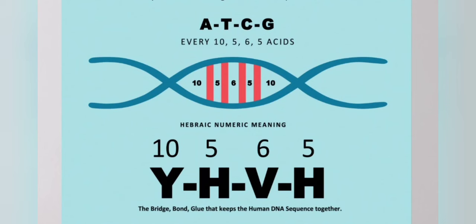At the base of our DNA, we have four main amino acids: A, T, C, G — adenine, thymine, cytosine, and guanine.